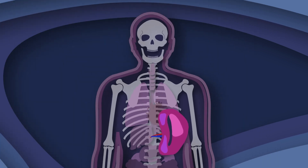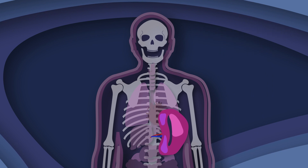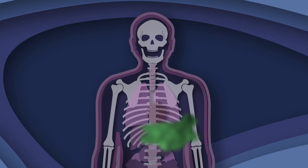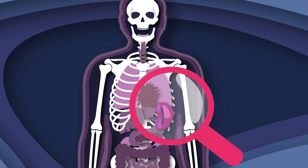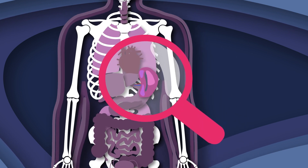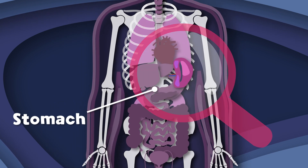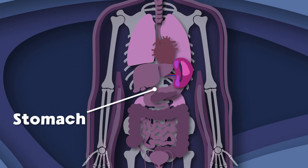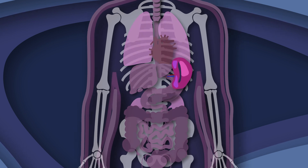I'm the spleen, the largest organ in the lymphatic system. You don't need me, but if removed from your body, you'll be more prone to infection. The spleen is located under the ribcage, above the stomach, here in the upper left quadrant of the abdomen — the space I share.